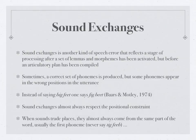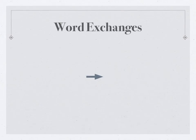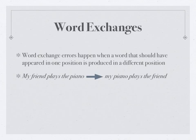This passage nicely explains the sound exchange error. Now we continue with another similar but different-level error referred to as word exchange. Word exchange errors happen when a word that should have appeared in one position is produced in a different position. For example, instead of saying 'my friend plays the piano,' under time pressure someone might say 'my piano plays the friend' — so we reverse the order of words. Here we are talking about exchange errors not in terms of sounds or phonemes, but in terms of words within sentences.